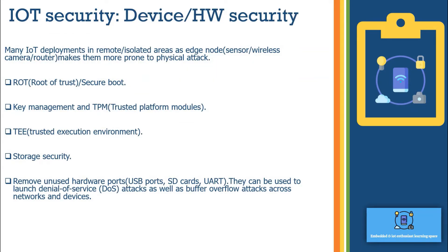Now let's understand some best practices that can lead to better hardware device security. Many IoT deployments are in remote and isolated areas — edge or fog nodes such as sensors, wireless cameras, or routers — which makes them more prone to physical attacks. There are some best practices we can put in place while designing secure hardware, though none are completely foolproof.